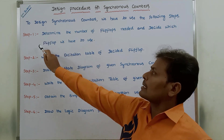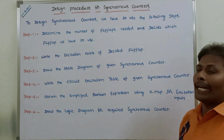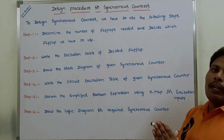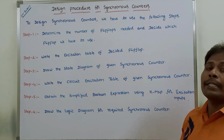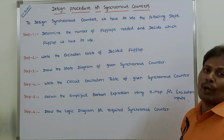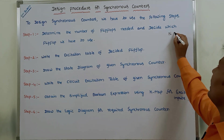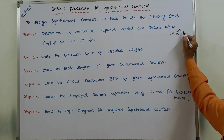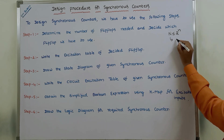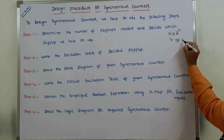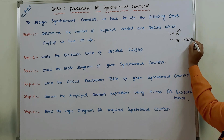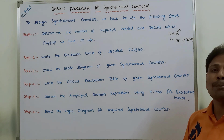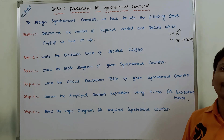The first step is to determine the number of flip-flops needed and decide which flip-flop to use. How many flip-flops are required can be calculated using this formula: N ≤ 2^n, where capital N is the number of states present in the given synchronous counter, and small n is the number of flip-flops required to design it.